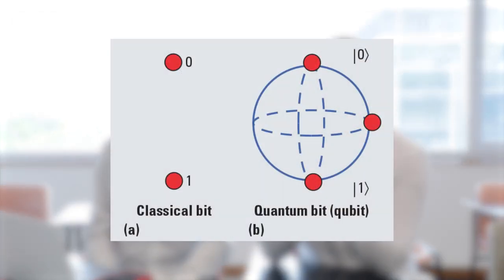Before we talk about quantum entanglement, we can go back a bit about how quantum computers work. In normal computers, as we mentioned before, they use a two-way system — ones and zeros. But quantum computers work in a bit different way. Instead of having only two options, they have three: it could be one, zero, or both. And those, instead of being called bits, are called qubits.